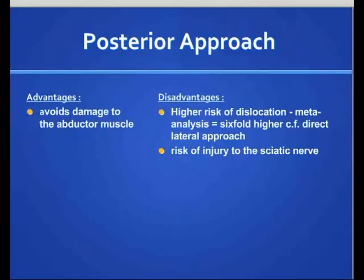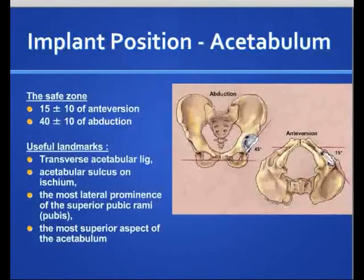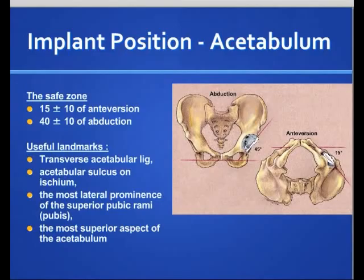Implant position obviously affects the risk of dislocation. The safe zone for anteversion is 15 degrees plus or minus 10 degrees. There are some useful landmarks that people use, most notably the transverse acetabular ligament, along with other useful landmarks that can be referenced.